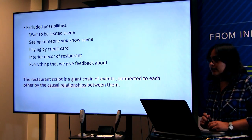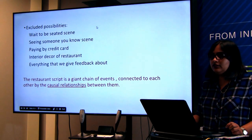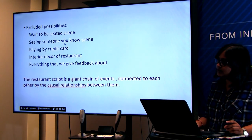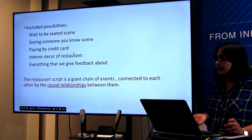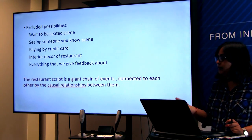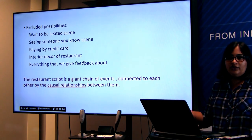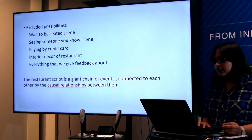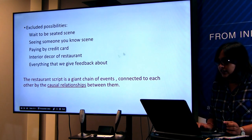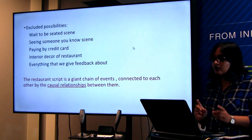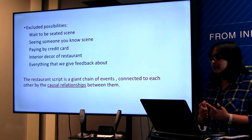But this script excluded some possibilities: a 'wait to be seated' scene; the possibility of seeing someone you know in the restaurant; paying by credit card; and the interior decor of the restaurant, which includes a podium if someone will seat you. All these excluded possibilities can also be given to the program. The restaurant script is a giant chain of events connected to each other by the causal relationship between them — every scene is related to each other through causal relationships.